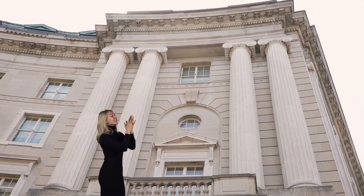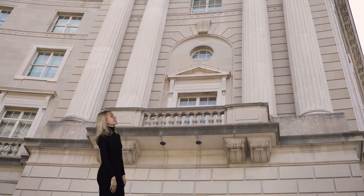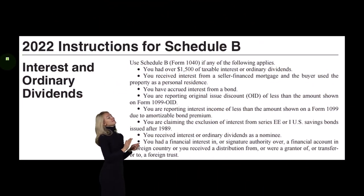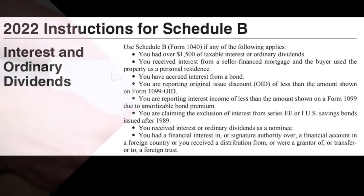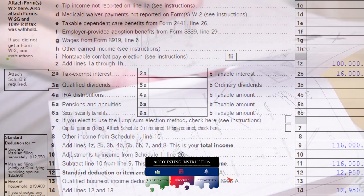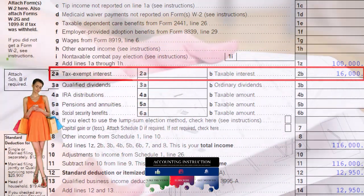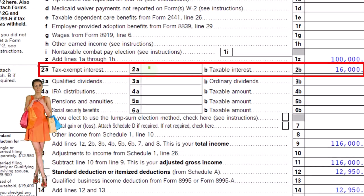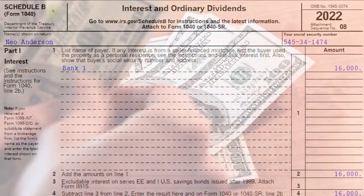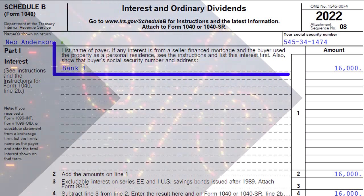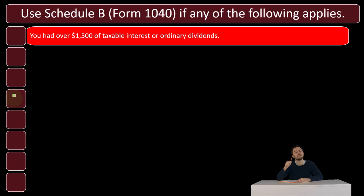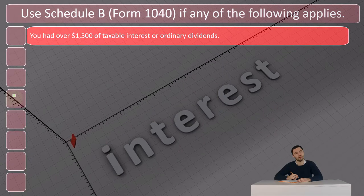If you don't report something that's on the 1099-INT, you will almost surely get a notice from the IRS saying they received a 1099 you didn't report, and there will be some kind of adjustment. Most of the information next comes from the 2022 instructions for Schedule B. Schedule B is a schedule you may have to use if your interest goes above a certain threshold — that being over $1,500 in taxable interest or ordinary dividends — which also ties to line 2a and 2b on page one of Form 1040.